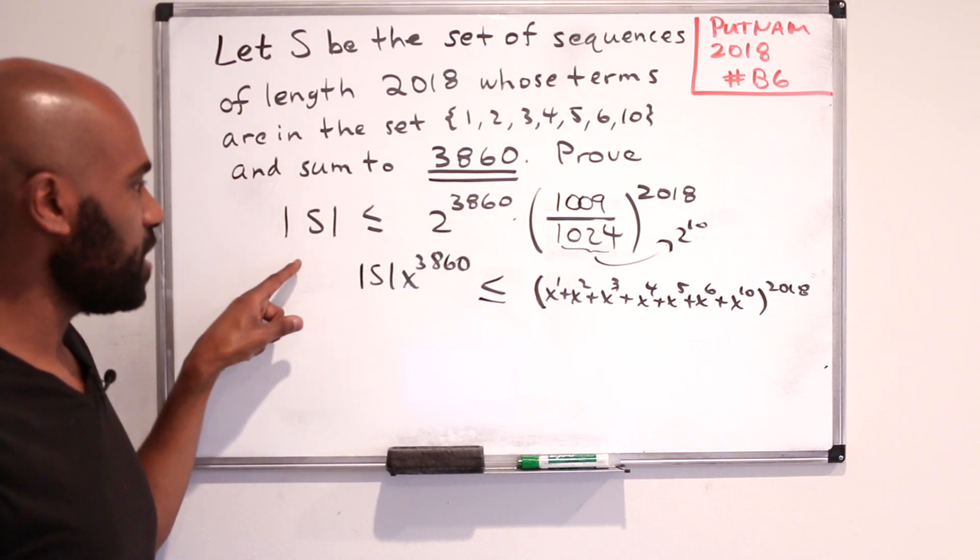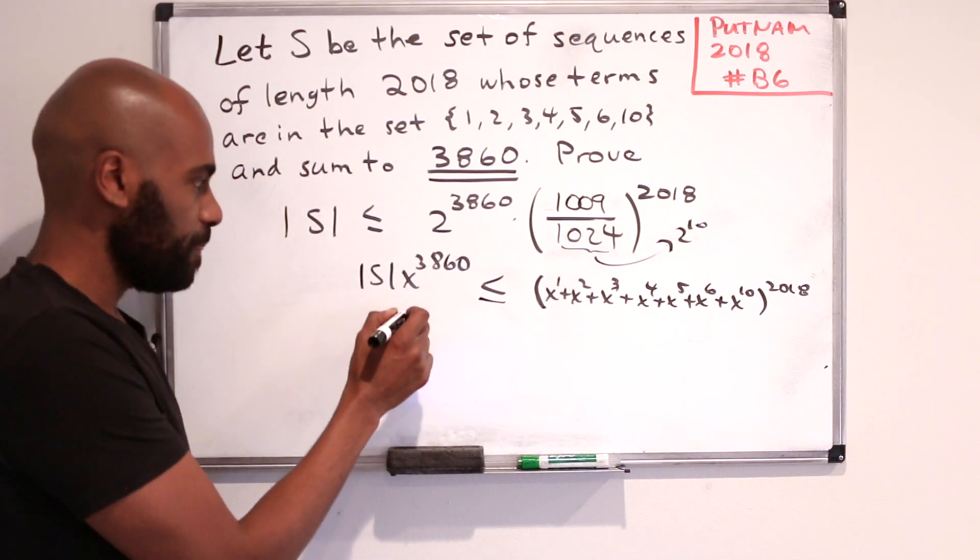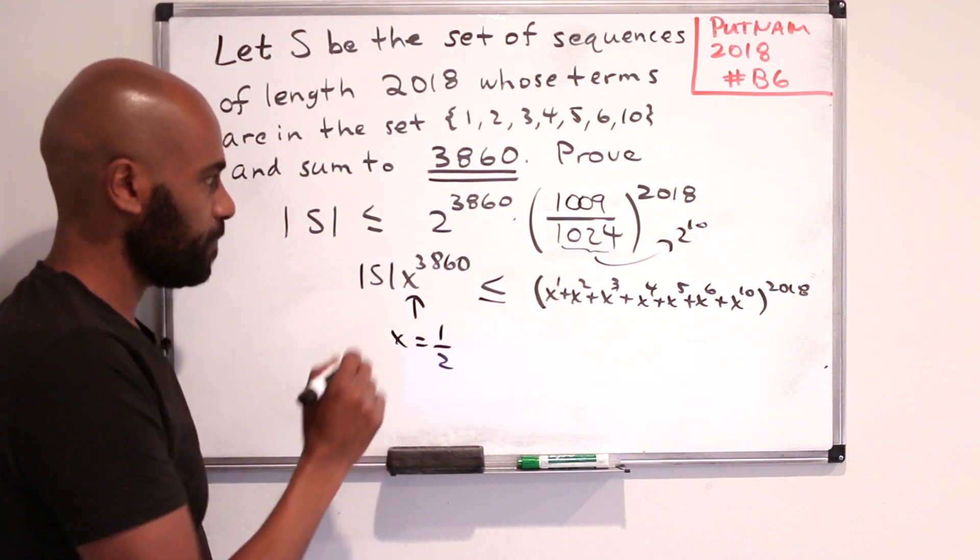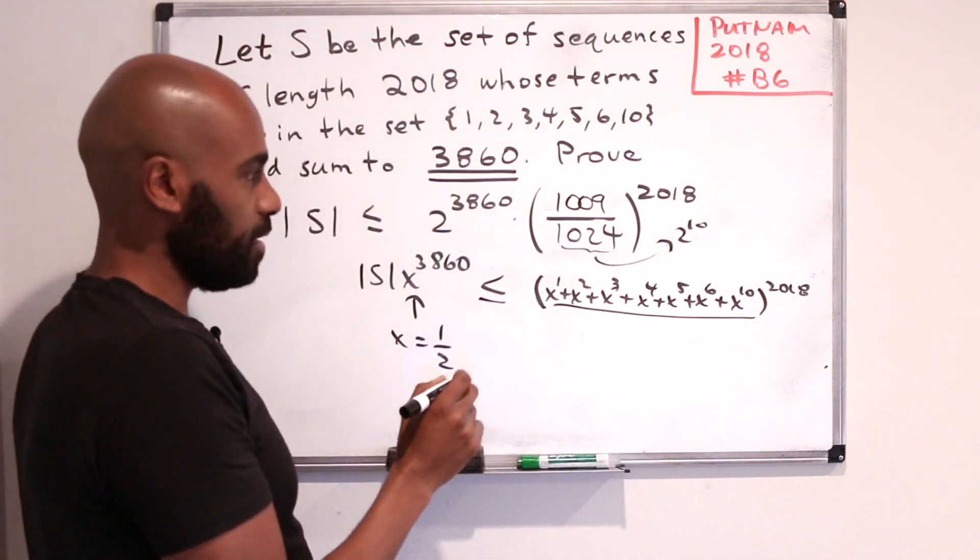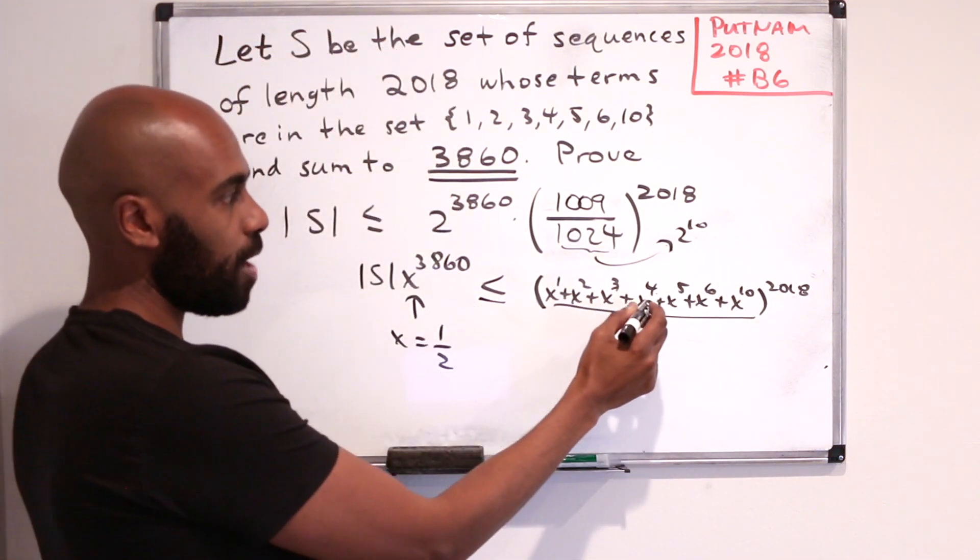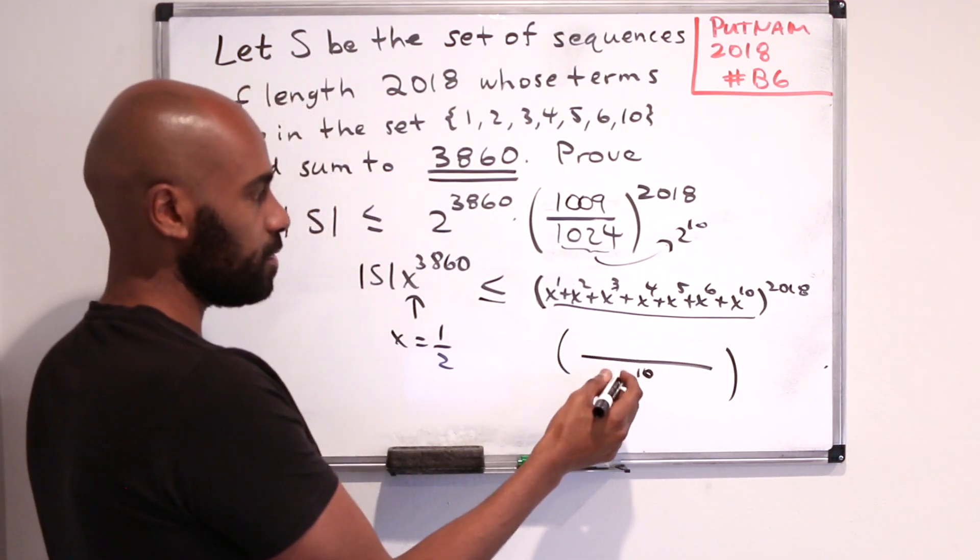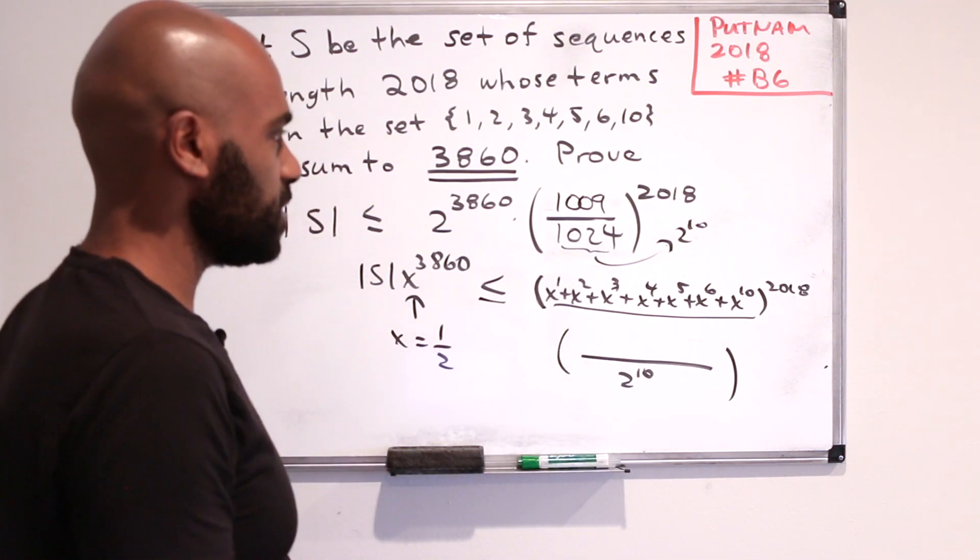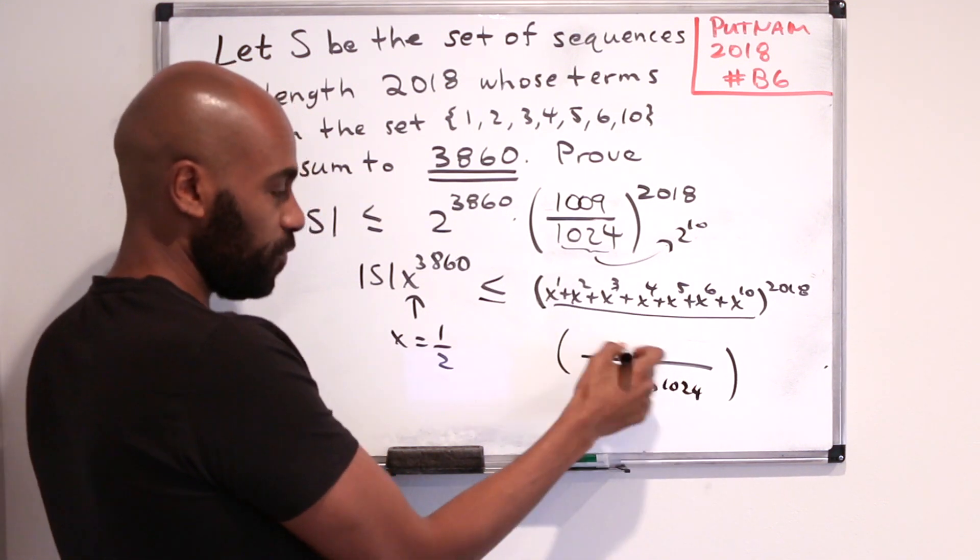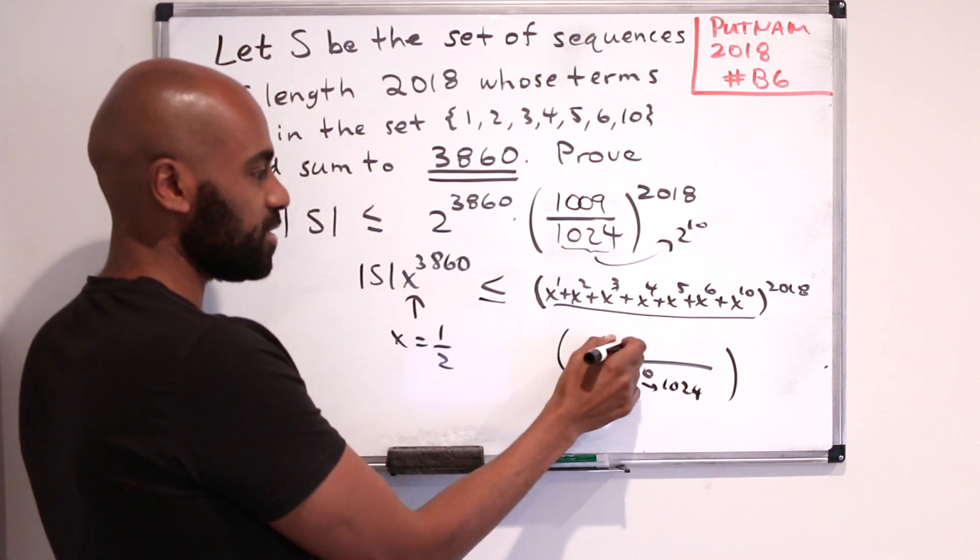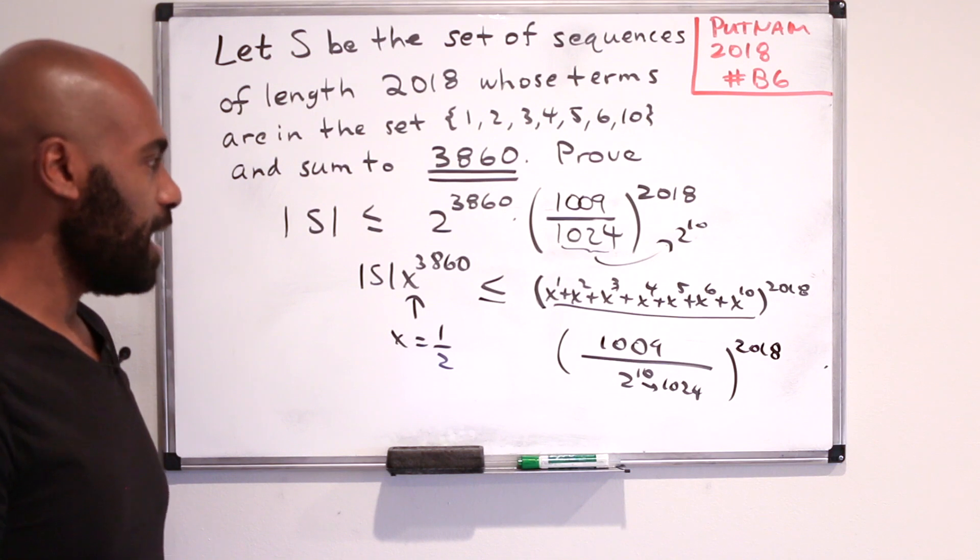So if you plugged in x equals a half, here, if you add up these things and find a common denominator, the common denominator is going to be 1 over 2 to the 10, or is going to be 2 to the 10. And then the sum of the exponents here is going to be all the stuff that's left over, which happens to be, so this thing is 1024. If you clear the denominators, this happens to be 1009.